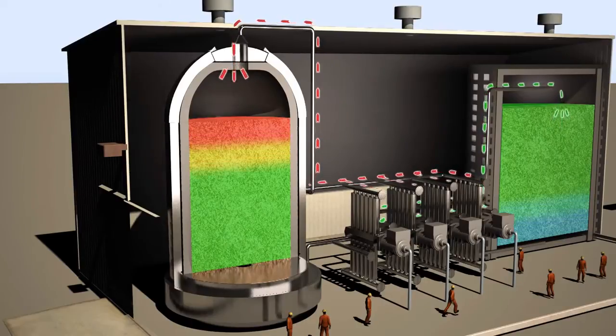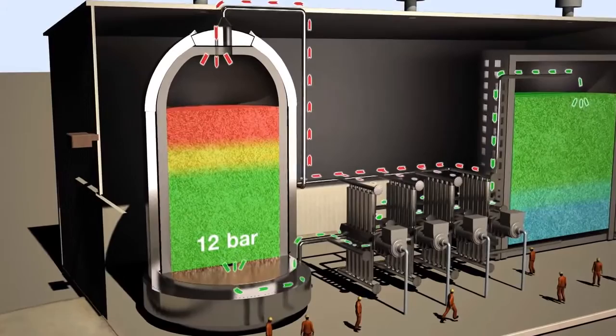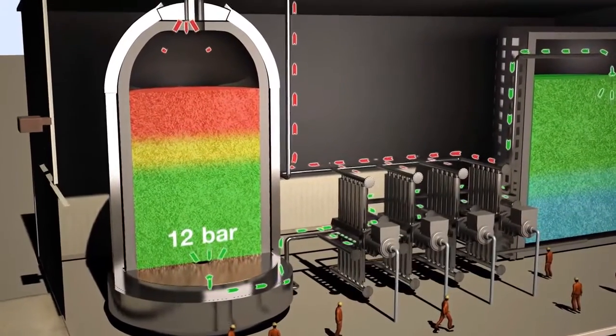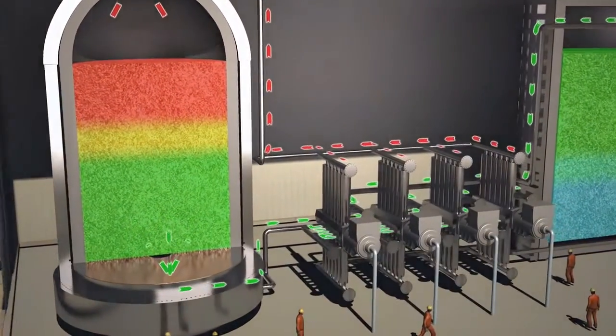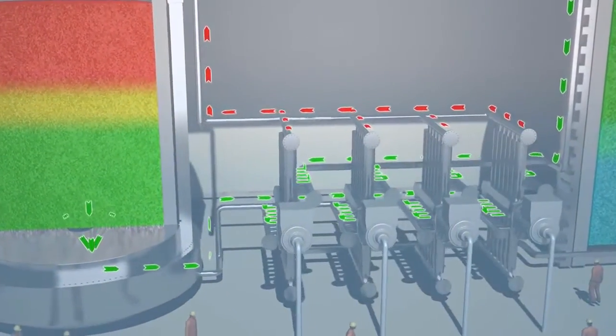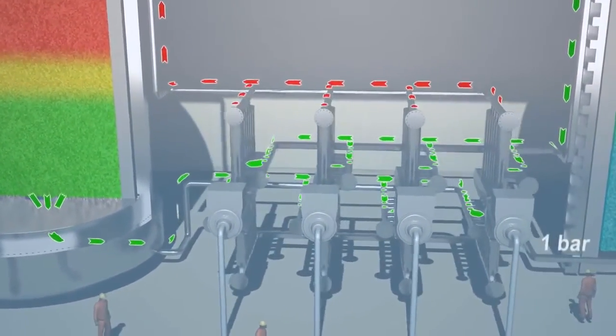At the bottom of the hot store, the gas is still at 12 bar but has cooled to ambient temperature. The gas flows to the lower cylinders, which act as expanders, and rapidly expand the gas back to 1 bar.